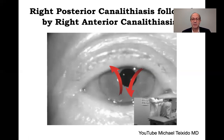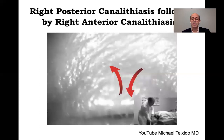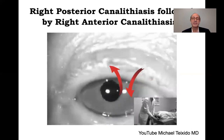On the Hallpike right position with the head hanging well below horizontal: with eyes open there's the upbeating and rotatory component, and then after closing her eyes there's a downbeating and to the right — that is right anterior canalolithiasis.